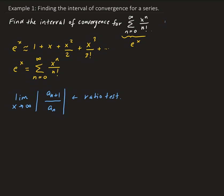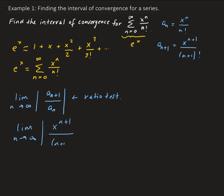In our case, the nth term is x to the n over n factorial. The n plus 1 term is x to the n plus 1 over n plus 1 factorial. So we compute the limit as n approaches infinity of x to the n plus 1 over n plus 1 factorial.